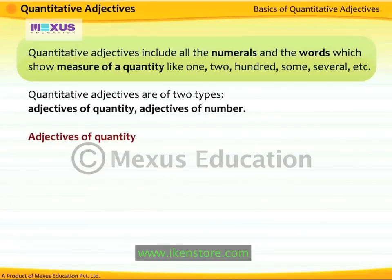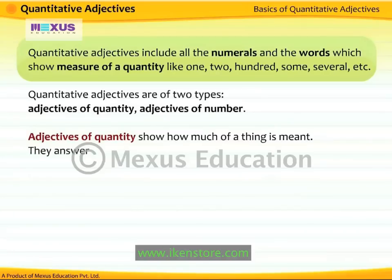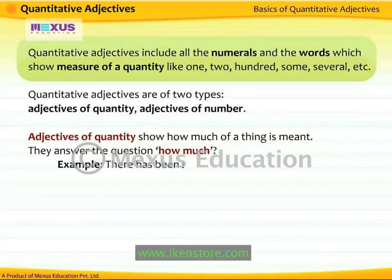Adjectives of quantity tell us how much or how many. They answer the question 'How much quantity?' Take a look at this sentence: 'There has been sufficient rain this year.' The adjective of quantity 'sufficient' answers the question 'How much rain?' — that is, the quantity of rain received this year.